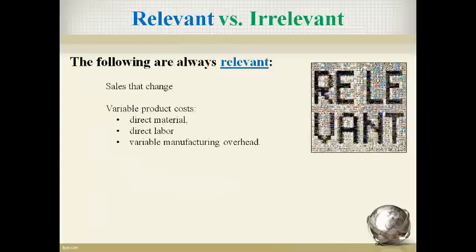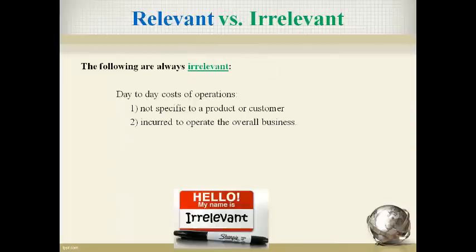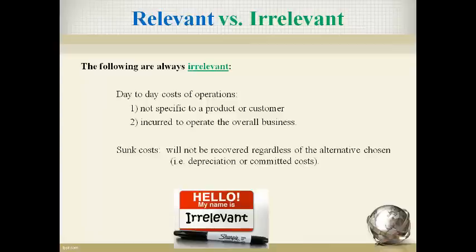There are some general rules about relevant and irrelevant costs that always hold true. Sales that change and the variable production cost of making those sales units will always change if a decision is made that changes sales. Added fixed costs and avoidable fixed costs, by definition, will always change. Losing out on a benefit or revenue that could have been received is always relevant. Costs to operate the business regardless of whether or not the new idea is implemented are always irrelevant. Costs that can't be recovered even if the decision is made, referred to as sunk costs, are always irrelevant.